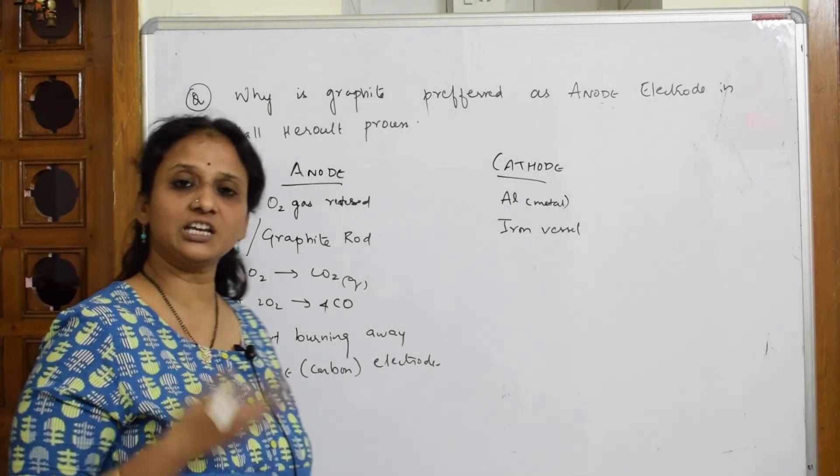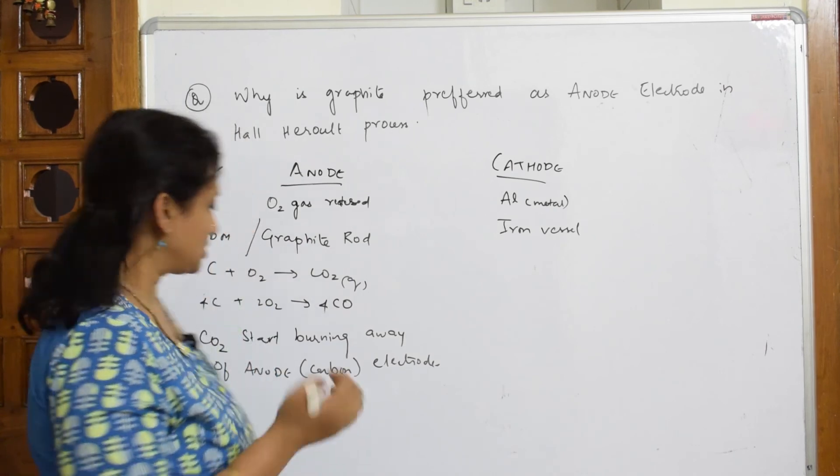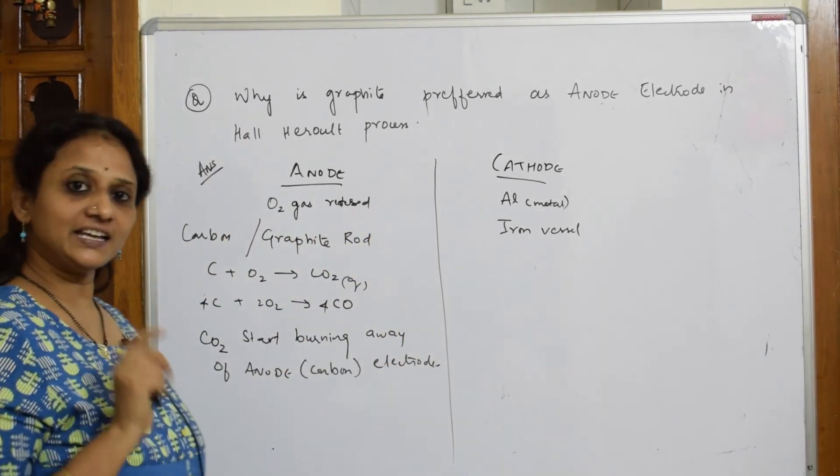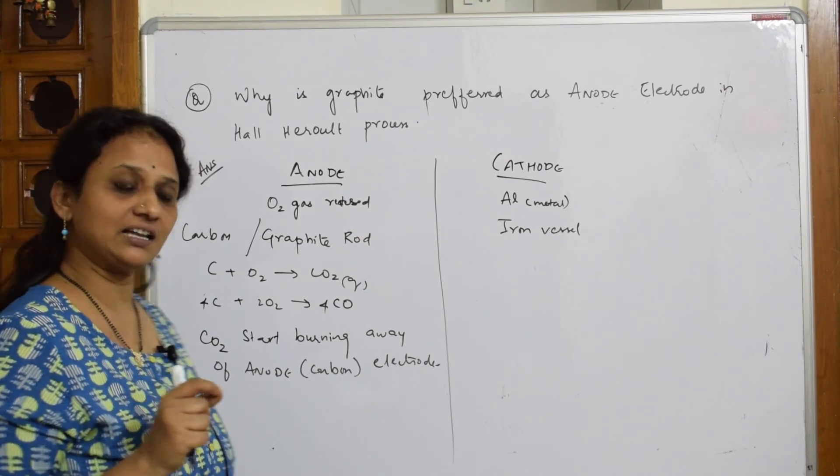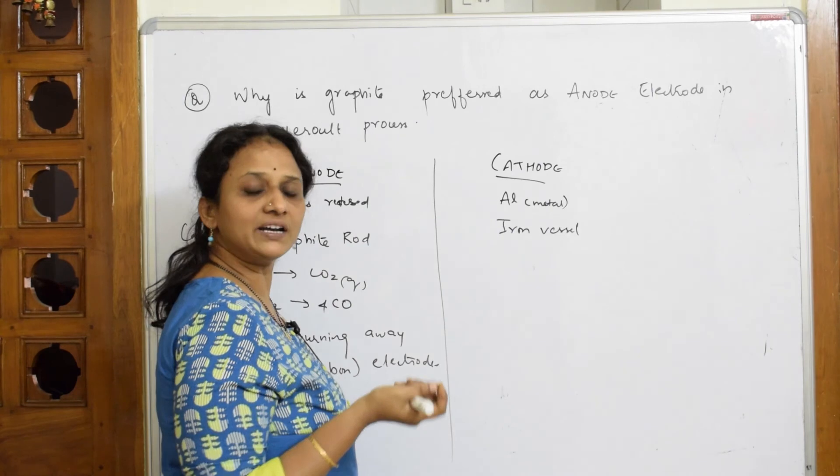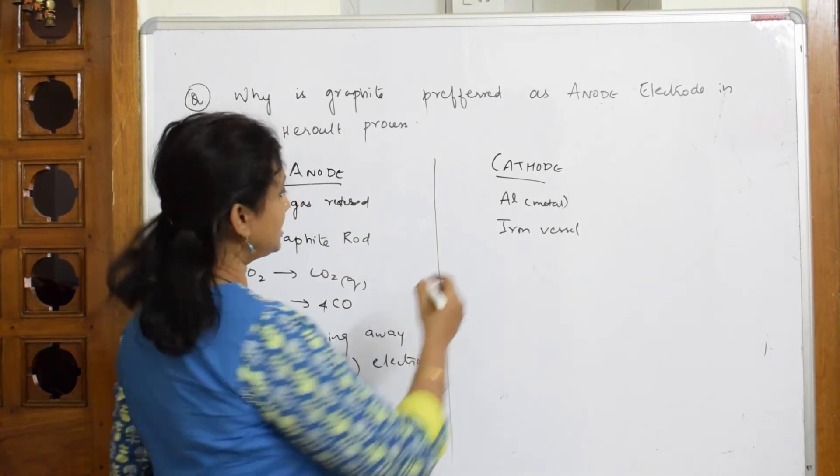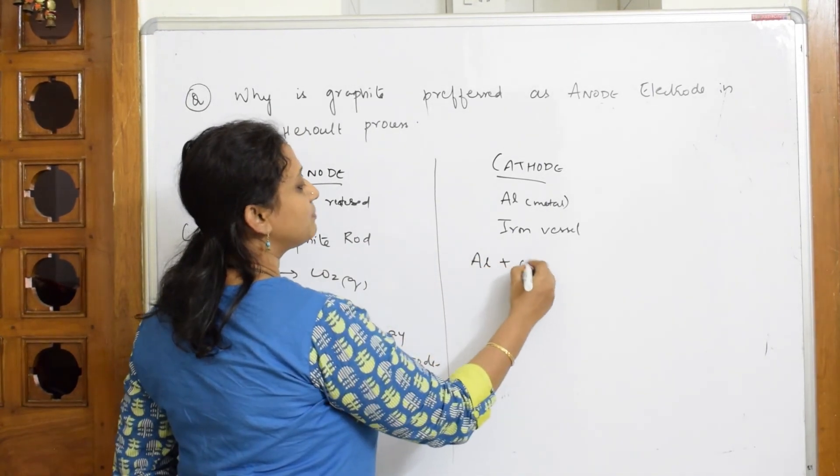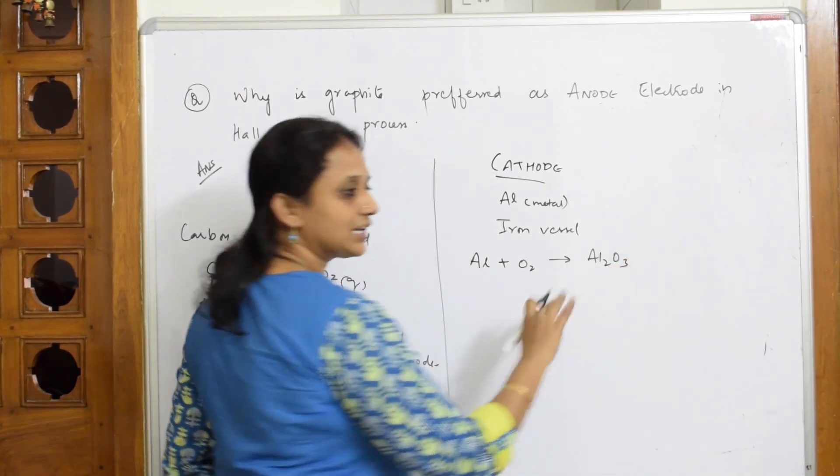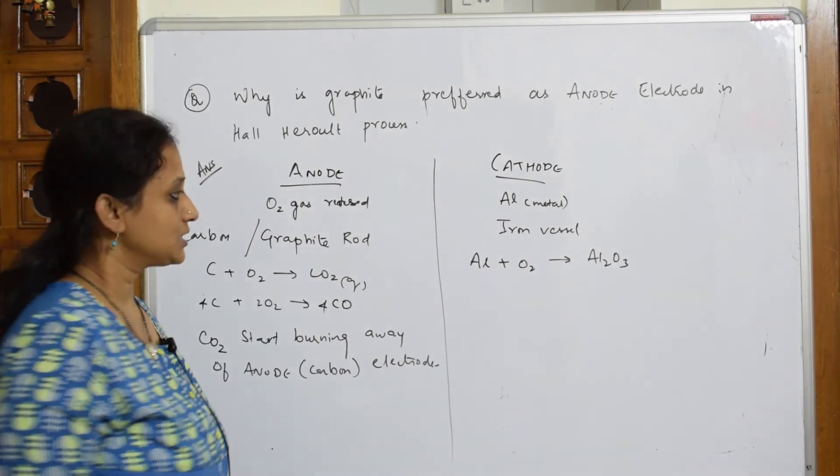You have to keep replacing it every time. That is the most important percentage. The next important thing, when I see the cathode electrode, this oxygen, whatever is there, it will again combine. You have already prepared aluminium metal. That oxygen will again combine with your aluminium metal and will form aluminium oxide. Again, the oxide form is back.